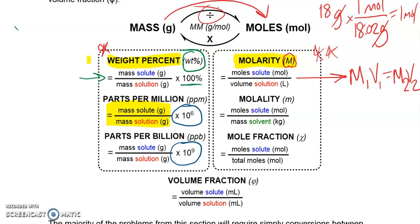Molality is a very similar word to molarity — the big difference is the 'l' — and it has units of a lowercase m. To avoid confusion, whenever I write the units for molality, I'll write a lowercase m with a bar on top, just to show it's a lowercase letter, since a capital M and a lowercase m can look very similar when writing fast. That lowercase m for molality is the abbreviation for moles divided by kilograms.